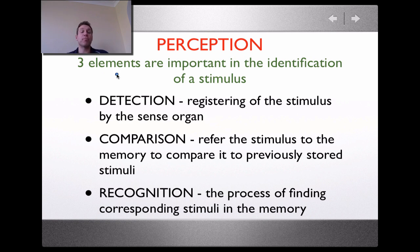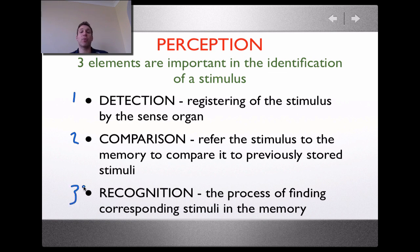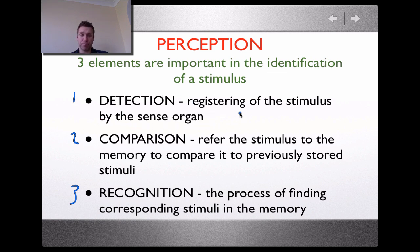As ever with these revision presentations, we're looking to get the marks in the exam. Perception tends to come out as a question covering three components that allow us to understand how we identify a stimulus. If you're detecting something, that means you are picking it up and that registration of the stimulus is through those sense organs — ears, eyes, etc. If we're not detecting something, we obviously can't then act upon it. So detection is the first stage of perception.